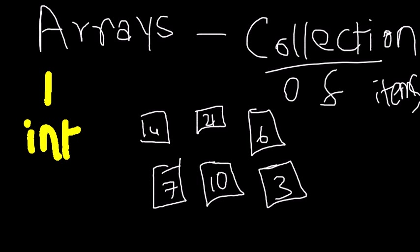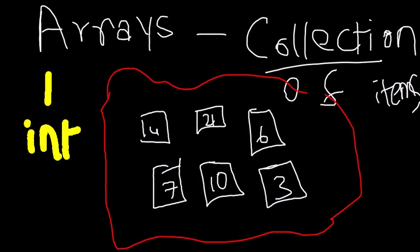Now these elements have positions, so every element has a specific position in this big yellow box which is the array. This is position 0, 1, 2, 3, 4, 5. Now if I asked you the length of this array, which is the total number of elements, the answer would be 6.